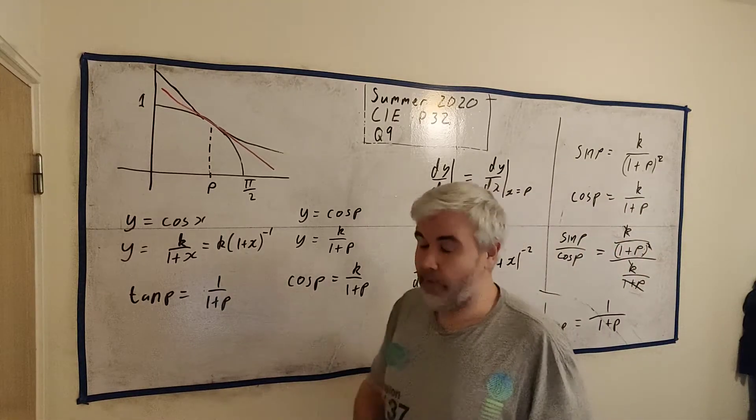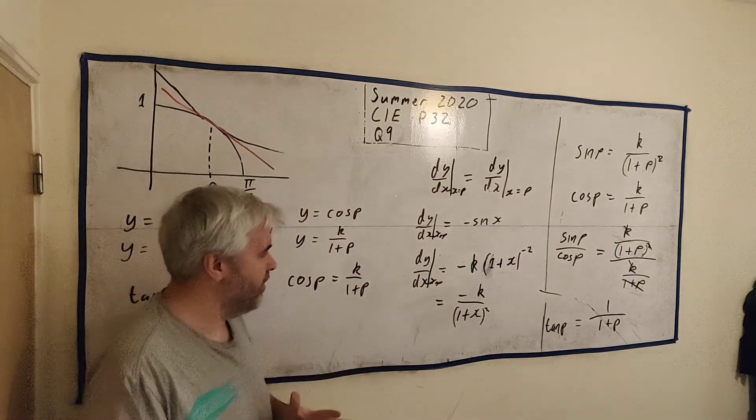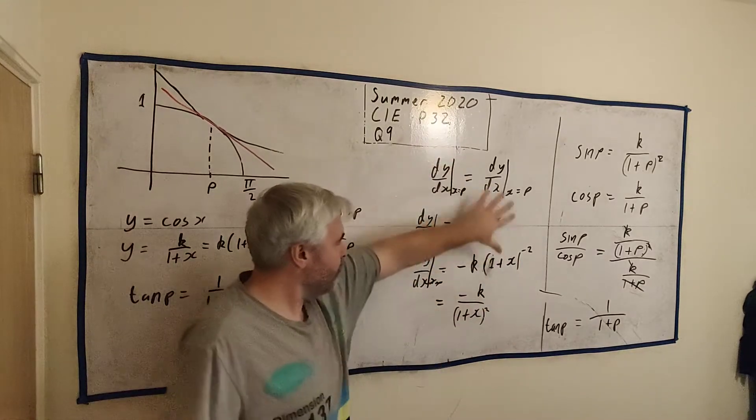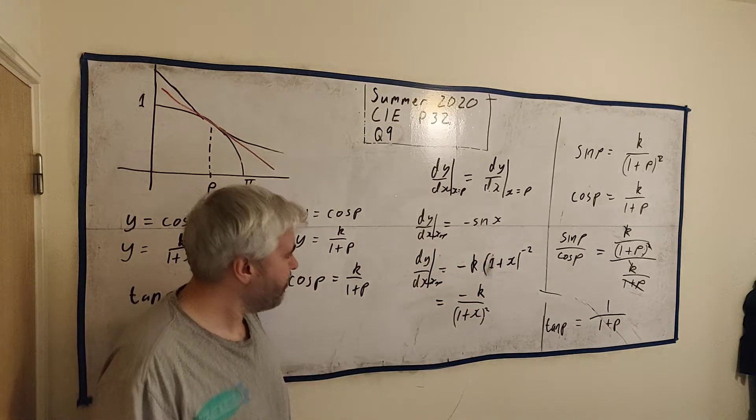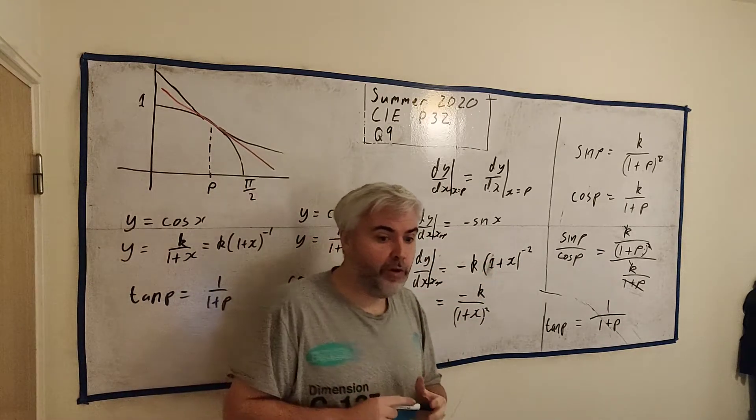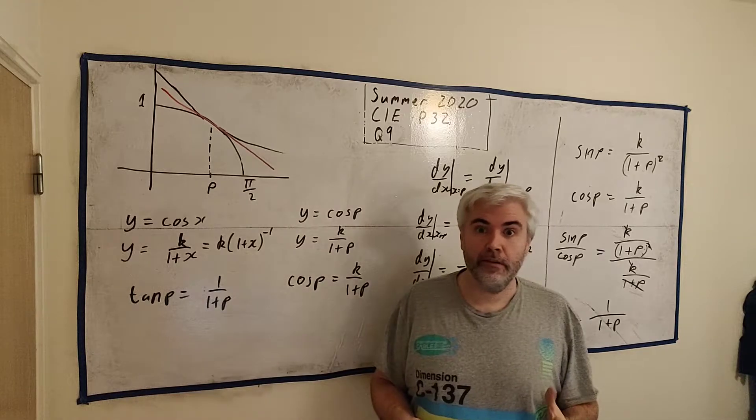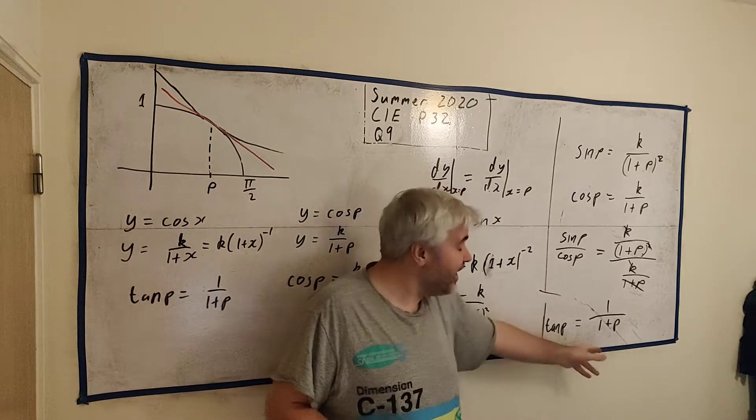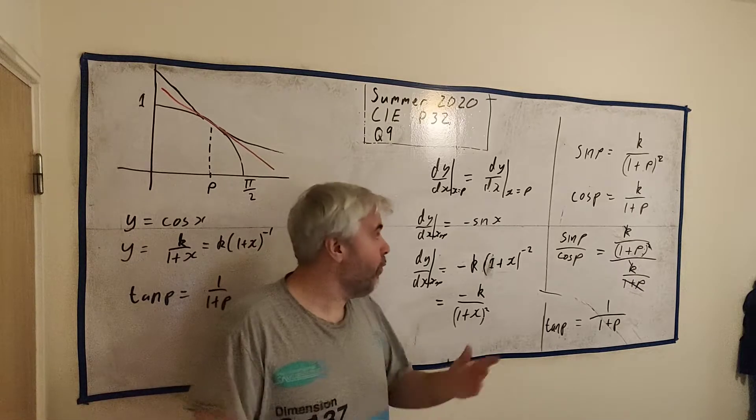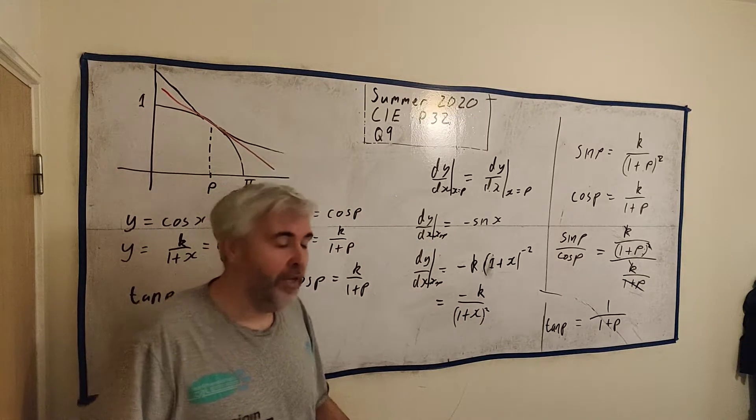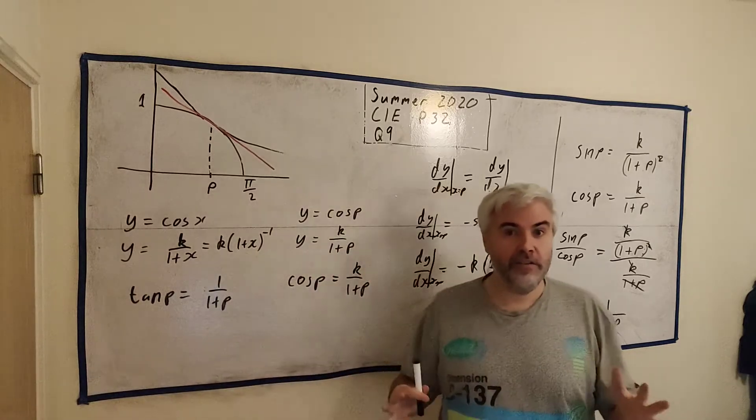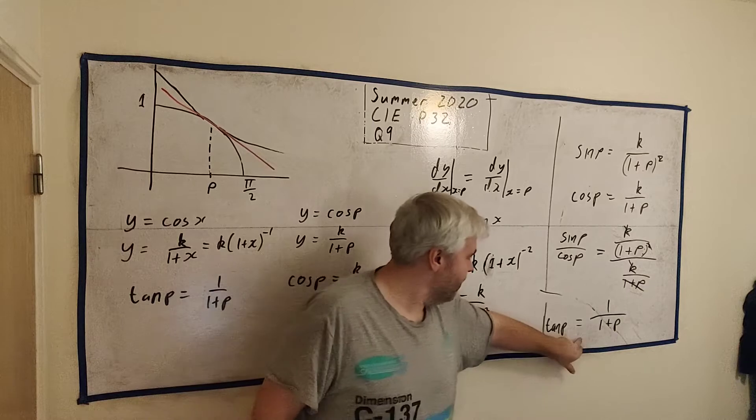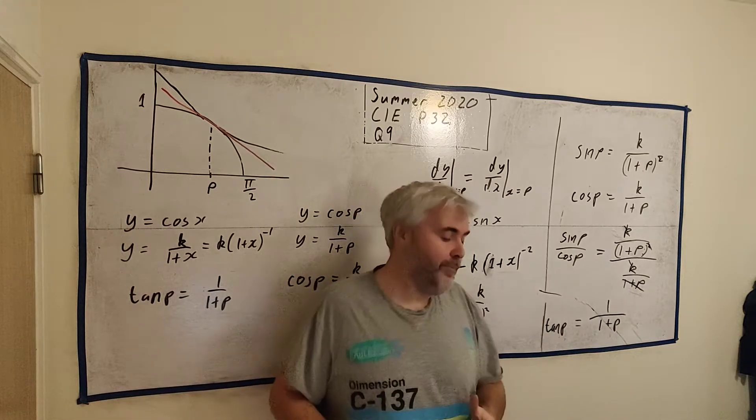Show that p satisfies this equation. Very difficult. So many students didn't do it, weren't able to do it, because they didn't realize this second leap of logic. Now, it is important to realize that you could still do part B. Because they gave you this. This is what you need to do part B. They did that because they were worried students wouldn't get to part A. So do not give up an entire question because you failed part A.